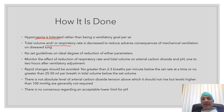There are no set guidelines on the ideal degree of reduction of either parameter. Monitor the effect of reduction of respiratory rate and tidal volume on arterial carbon dioxide and pH 1 to 2 hours after ventilatory adjustment. Whenever you make any adjustment in the ventilatory settings — either respiratory rate or tidal volume — you need to monitor the pH and the arterial carbon dioxide, 1 to 2 hours after adjustment.